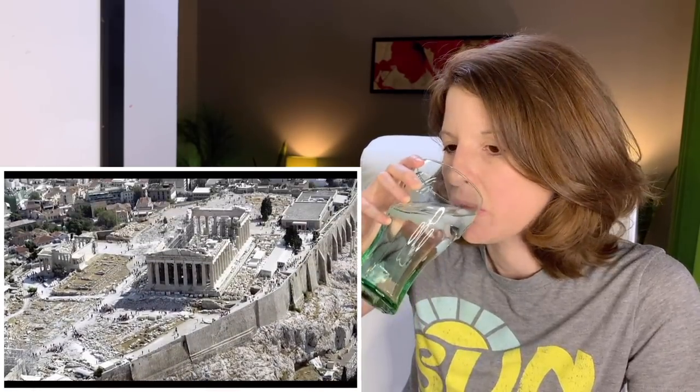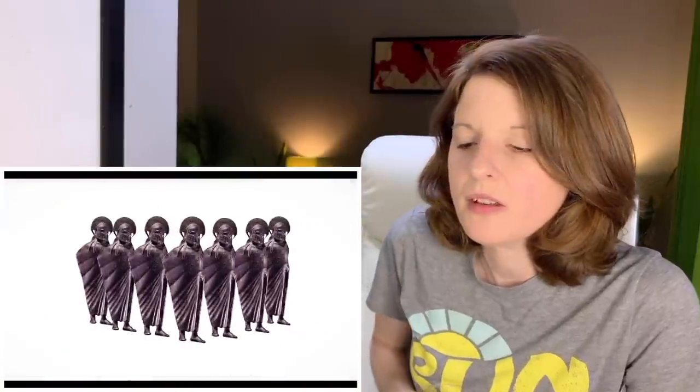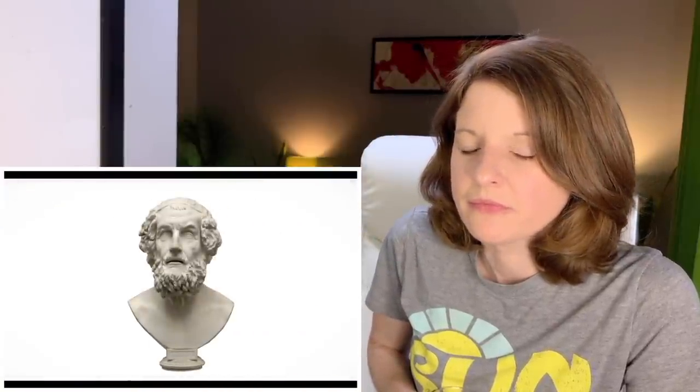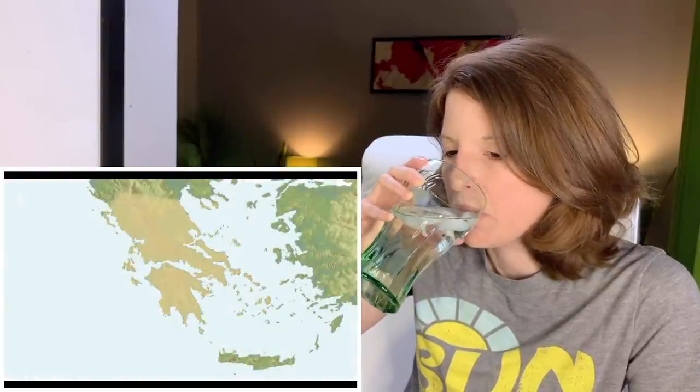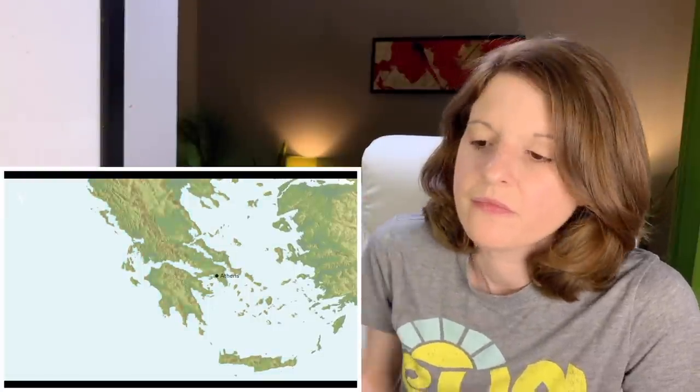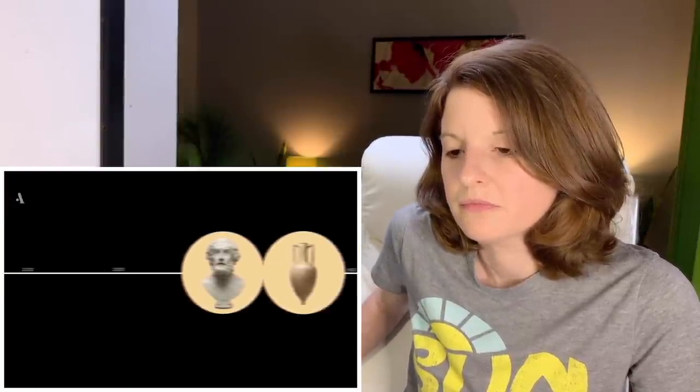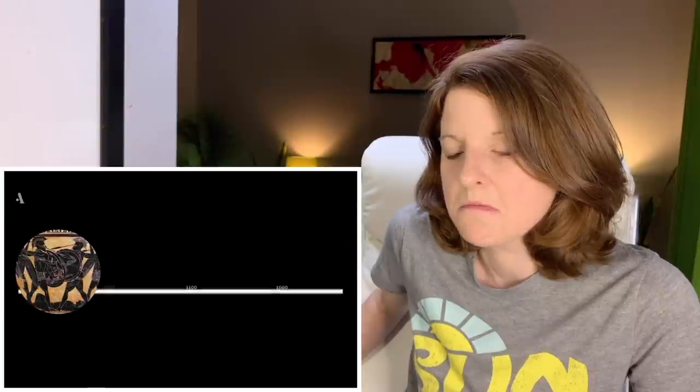We might think we already know everything about ancient Greece — the Parthenon, the 300 Spartans, and blind Homer's Iliad and Odyssey are familiar to all. Yet there were far more than 300 Spartans. The Parthenon was actually built as a kind of central bank, and no such unified state as ancient Greece with Athens as its capital ever existed. The Trojan War was as distant in time to Alexander the Great as the Vikings are to ourselves.